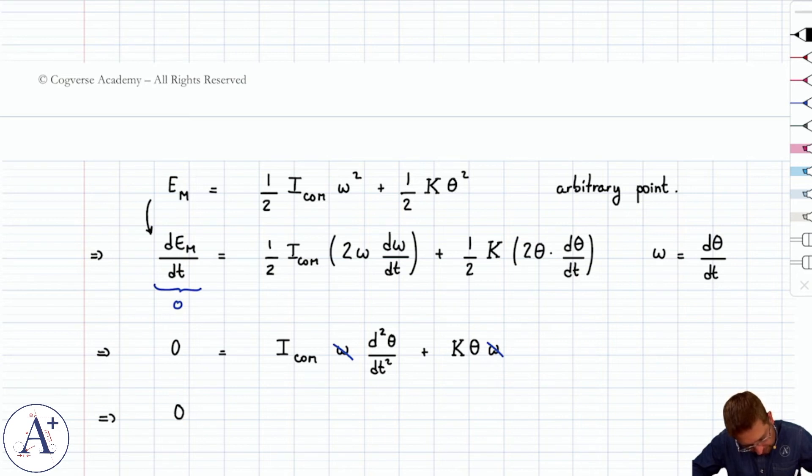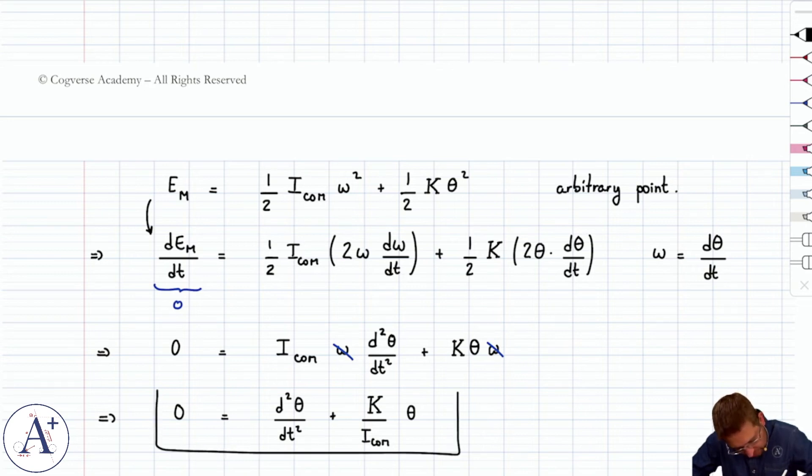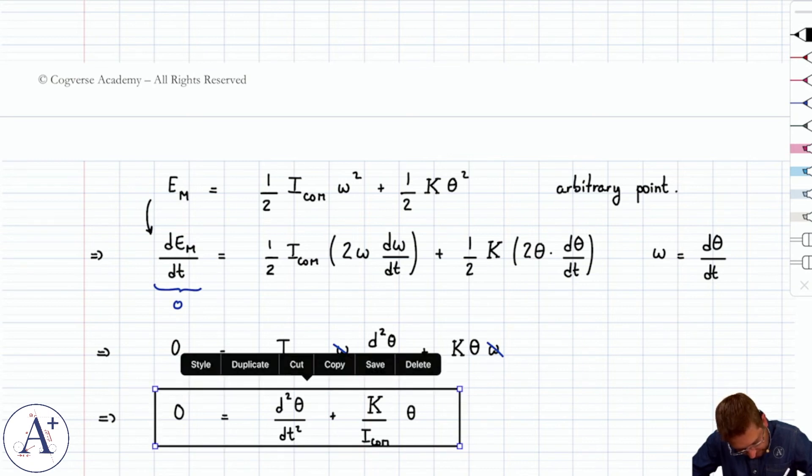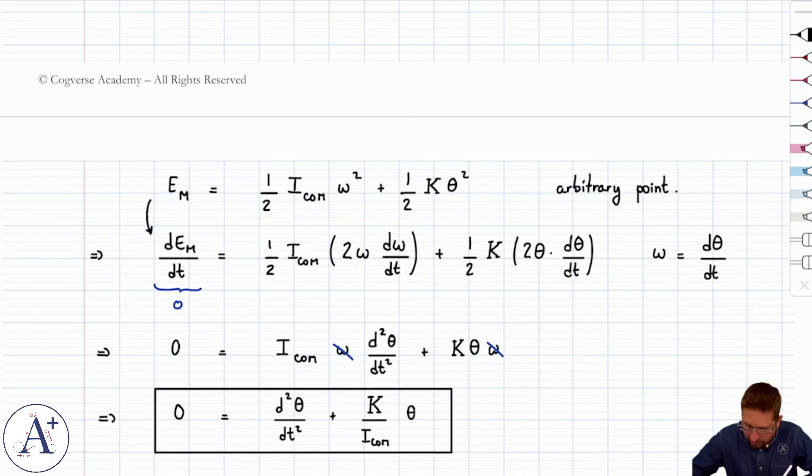And then if we divide by whatever's in front of the highest order derivative to put in standard form, we actually directly get the right form of the differential equation. No need to introduce a small angle approximation here, we just get the right differential equation directly off the bat. So that's d2 theta dt squared plus kappa over I center of mass theta equals zero. And because this is the right form, we know that this is omega squared.